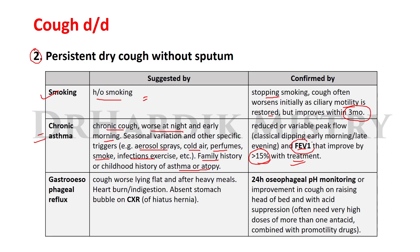Chronic asthma is further suggested by reduced or variable peak flow meter readings, decreased early morning or late evening status, and FEV1 improving by 15% with treatment. Gastroesophageal reflux is suggested by cough that worsens when lying flat and after heavy meals, along with heartburn or indigestion, and absence of the stomach bubble on chest X-ray in hiatus hernia. It is confirmed by 24-hour esophageal pH monitoring or improvement with raising the head of the bed and acid suppression drugs.